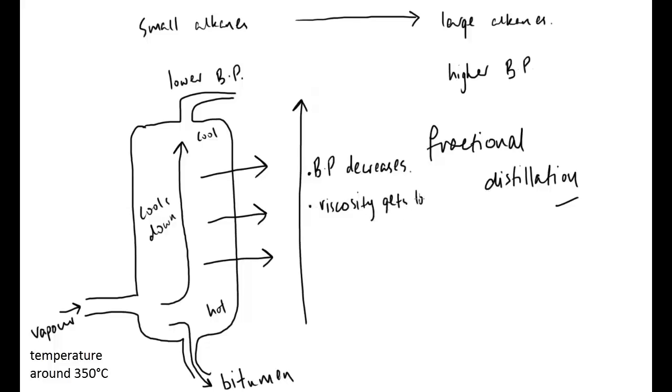Viscosity gets lower. So, they become less viscous. And what we mean by that is something like syrup is very viscous. It's very thick, very gloopy. Something like water isn't very viscous. And obviously going up to the top, something like a gas is not very viscous at all.